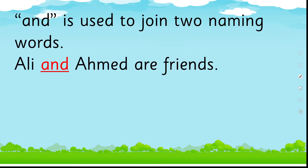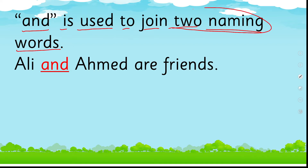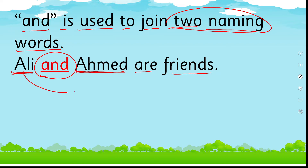First, 'and.' And is used to join two naming words — as I just told you, when there are two naming words we join them by 'and.' For example: 'Ali and Ahmad are friends.' Here 'Ali' is one naming word and 'Ahmad' is another naming word, and we put 'and' between them. So this is one use of 'and' — it joins two naming words.